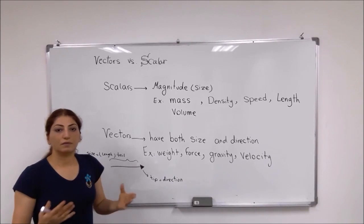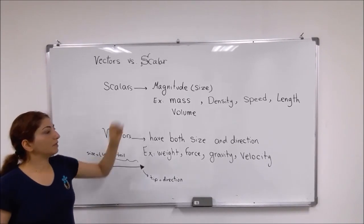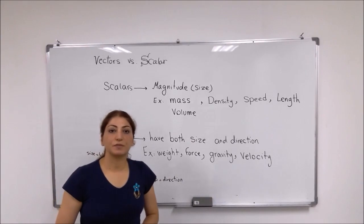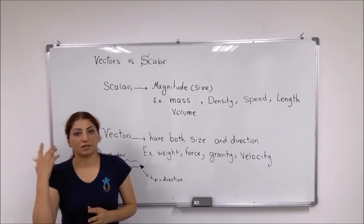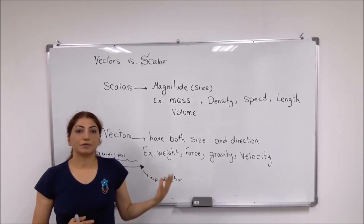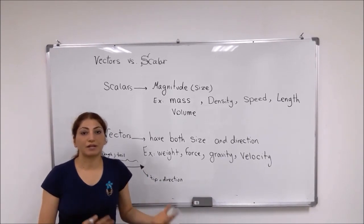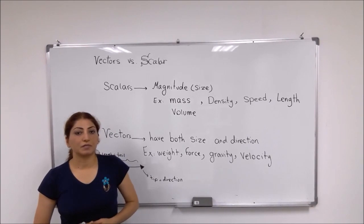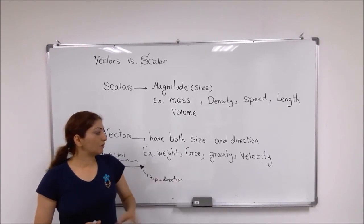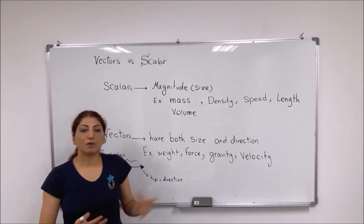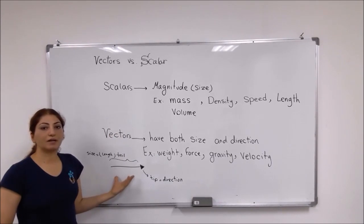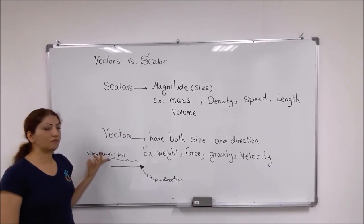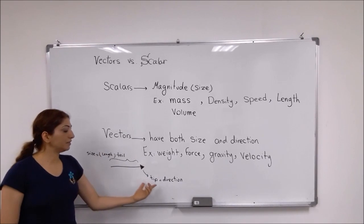So we have to know that scalar and vector quantities are different. In scalar quantities, you only have a size, and that size is very important. For vectors, we have to know about both the direction and the size of the values we have measured — examples like force, gravity, and velocity. To show vector quantities, we use arrows: the length of the tail shows the size, and the tip shows the direction.